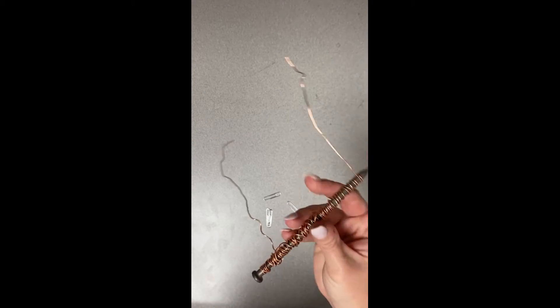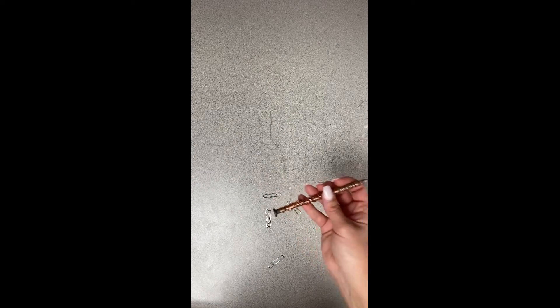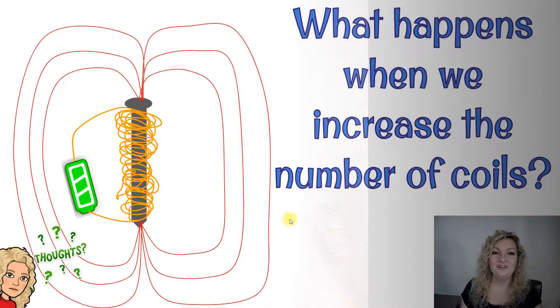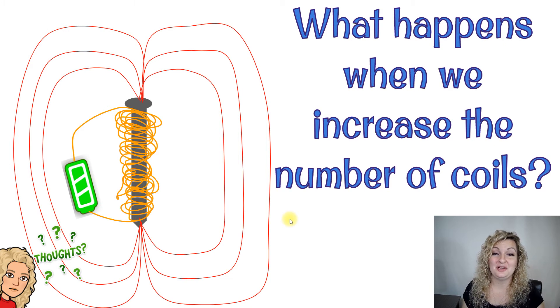Once you unplug it, you can see it no longer picks up paper clips because it's turned off. We definitely answered our question about what happens when we increase the number of coils. We increase the strength of our electromagnet because we're increasing the strength of the magnetism we're creating.